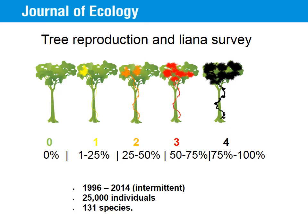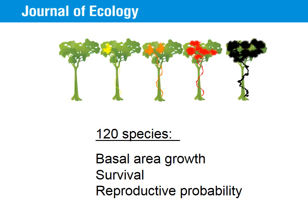We also recorded the reproductive status and the presence of lianas in tree crowns for roughly 20,000 individuals measured between 1996 and 2014. For the lianas, we scored the proportion of each tree crown covered by lianas on a five-point scale, which corresponds to the severity of crown infestation — each score corresponds to between 0 and 100% of the crown covered by lianas. Using this data, we looked at the effects of lianas on tree growth, survival, and reproduction for about 120 species.